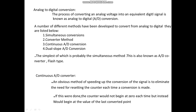In the continuous A/D converter method, A/D means analog to digital converter. This method is used to increase the speed of conversion of the signal. In the converter method, the signal is relatively weak, and that is why this method is used.